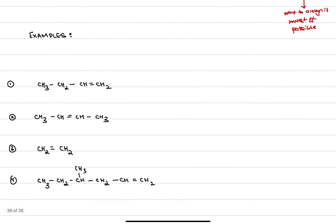Let's look at our first example. Counting the longest carbon chain: one, two, three, four carbons — so the prefix is 'but'. I can see there is one double bond and the rest are single bonds, which tells me it has the alkene functional group, so the suffix is '-ene'. What if I take this double bond and shift it to a different position? Let's look at the next example.